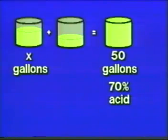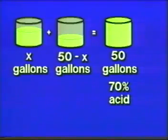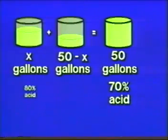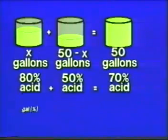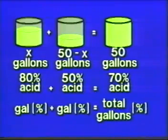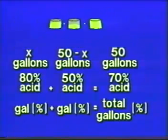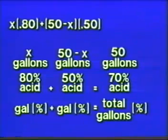Let X stand for the number of gallons in the first beaker. Since there are 50 total gallons and X gallons are in the first beaker, we represent the gallons in the second beaker as 50 minus X. The first beaker contained 80% acid and the second contained 50% acid. The general idea is that we multiply gallons times percent for each beaker: gallons times percent plus gallons times percent equals total gallons times resulting percent. We're calculating acid plus acid equals total acid.